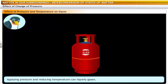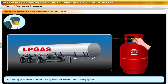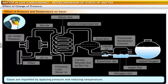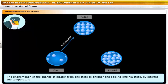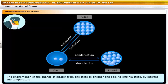Now, let us see the effect of pressure on the interconversion of the states of matter. Gas gushes out with a hissing sound when you open the knob of a domestic gas cylinder. In a domestic cylinder, the gas is compressed at a high pressure and a low temperature and is stored in the form of liquid petroleum gas. When the knob is opened, the pressure is released and the gas gushes out. This is possible only in gases because gases can be compressed. Gases can be liquefied by increasing pressure and lowering temperature. This principle is used in the liquefaction of air to separate the components of air. To sum it up, the process where matter changes from one state to another and back to its original state by altering the temperature is interconversion of the states of matter.